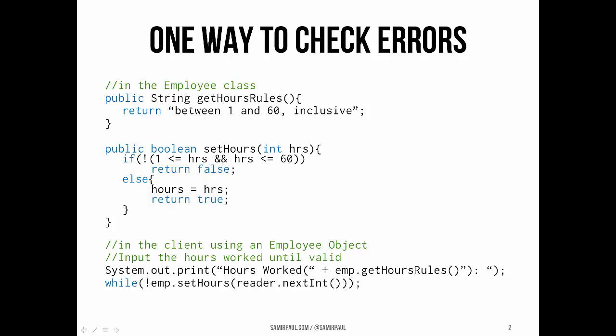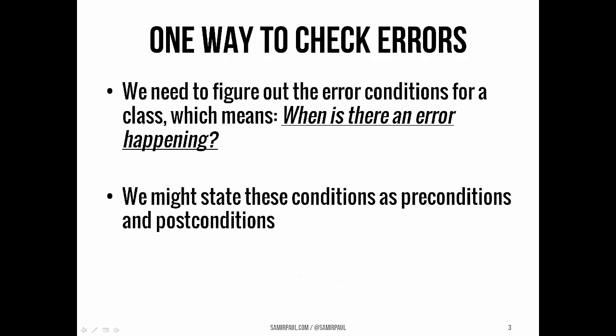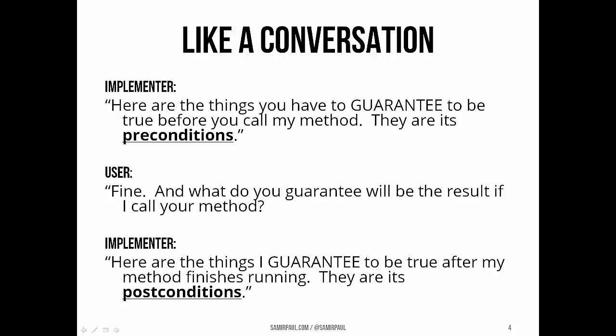We're going to talk about a more formal way of describing error conditions in code, and how we can detect and respond to those errors. Before we can actually implement code for error handling, first we have to determine what the error conditions for a class actually are. We want a systematic way to do this, so basically we state those conditions in a class's interface as preconditions and postconditions. You might think of preconditions and postconditions as a sort of subject of a conversation between the user of a method and the implementer of a method.